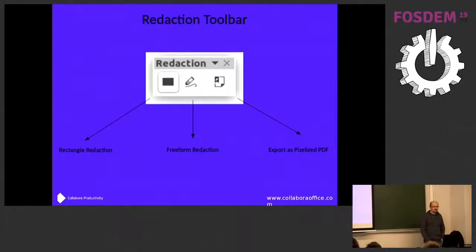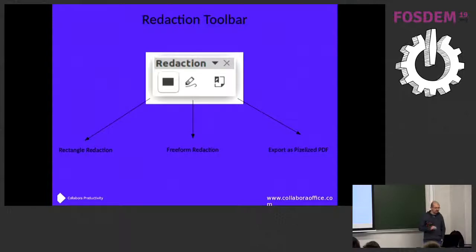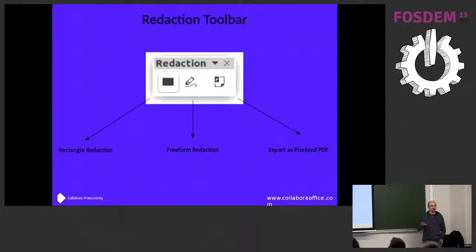This is how the redaction toolbar looks at the moment. We have a rectangle redaction tool that allows you to draw rectangles over areas that should be redacted. We also have a freeform redaction tool that works like using a pen on paper — you can redact freely. Then you click the export button, it asks you for a location to export, pixelizes the document, and writes it as a PDF document.